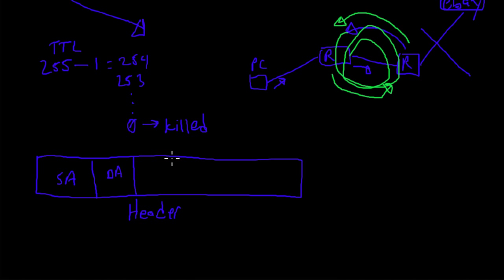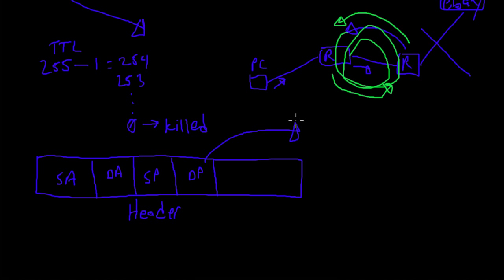Then we've got a source port, SP. The source port is usually a random number if it's created by a computer — something like 20,000 or 30,000. We also have a destination port, which is how the receiving computer or router knows which application to send the packet to. There are a bunch of well-known port numbers.